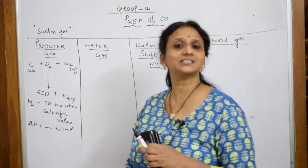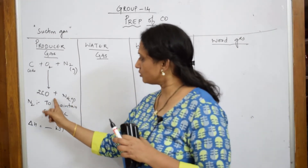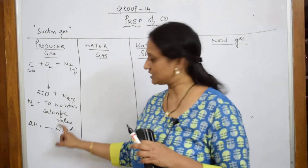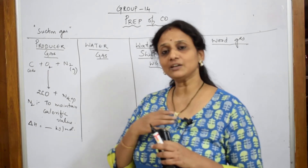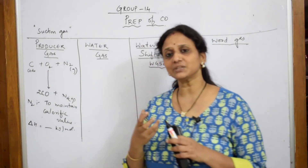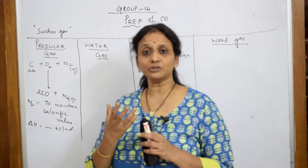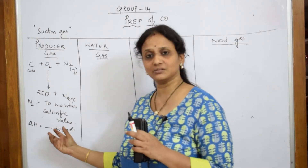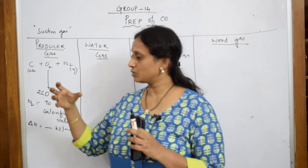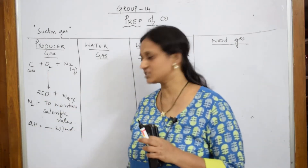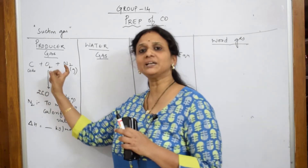Carbon monoxide is a poisonous gas. So, to maintain all the heat released, nitrogen is going to maintain that heat. Calorific value means to sustain or retain the amount of heat released — to maintain that temperature which is released due to complete combustion of carbon.